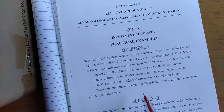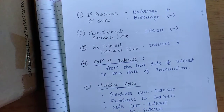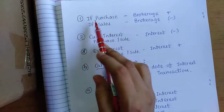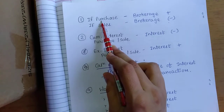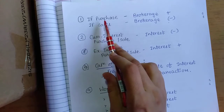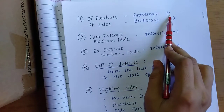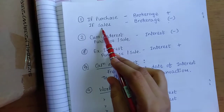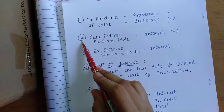Before starting with the practical examples, let's revise the notes in short. Point number one: if purchase is there, that means if you are purchasing any securities like shares, debentures, bonds etc., in that case brokerage will be added. If sales is there, then brokerage will be deducted.